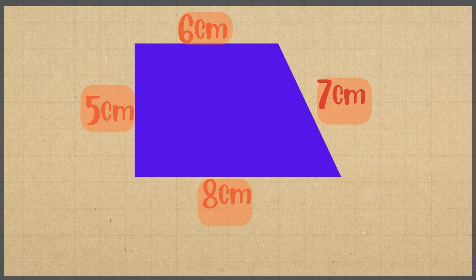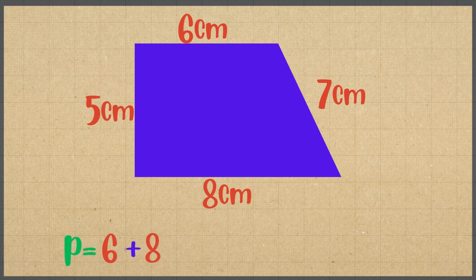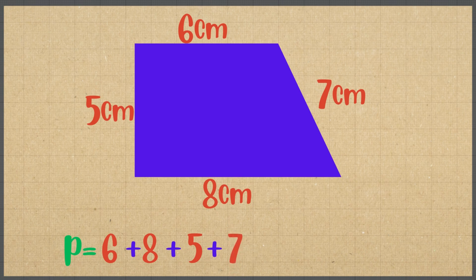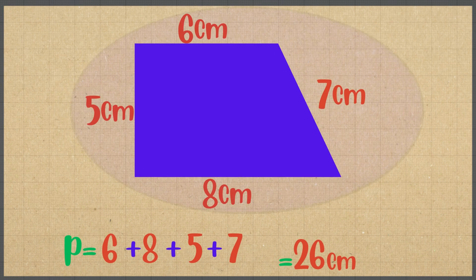When we add six centimeters, eight centimeters, five centimeters, and seven centimeters, the total is 26 centimeters. So the perimeter of this irregular quadrilateral is 26 centimeters.